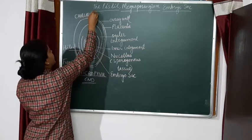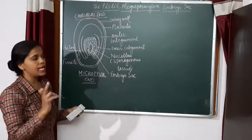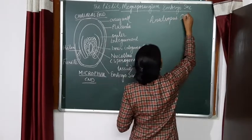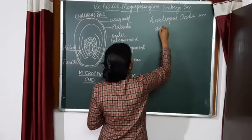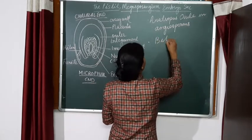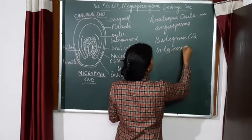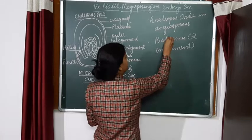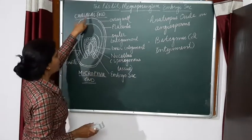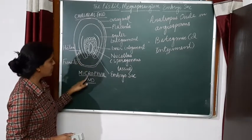So ovule structure is anatropous type of ovule in angiosperms. It is a characteristic feature of angiosperms, the flowering plant. Second, it is bitegmic means the two integuments, outer and the inner integument is present. This is the anatropous ovule means upside down. Upper side is known as chalazal end. The lower side which is not covered by the outer and the inner integument, that is called as the micropylar end.